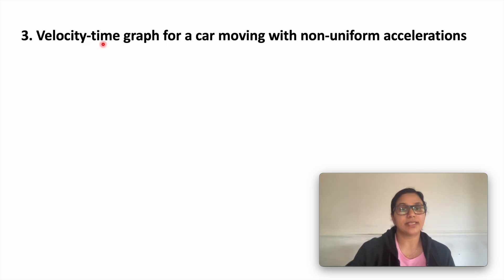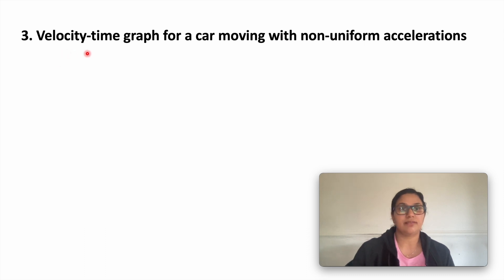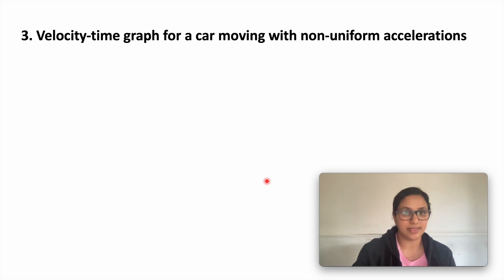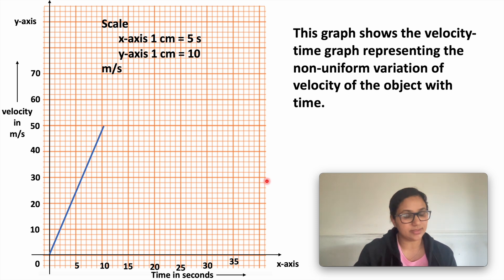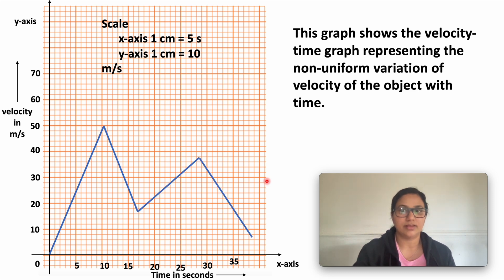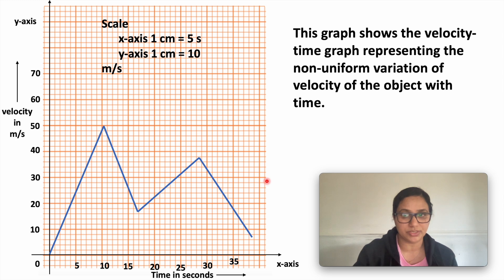Case 3: velocity-time graph for a car moving with non-uniform acceleration. What is that? Sometimes the velocity increases and sometimes it decreases. The nature of the graph shows velocity increasing, then decreasing, then increasing again, then decreasing again. This is the velocity-time graph representing the non-uniform variation of velocity of the object with respect to time.